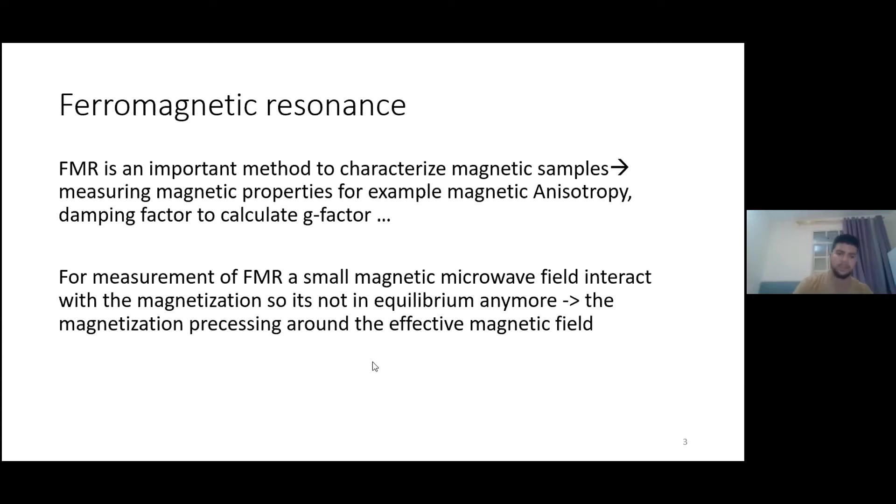There's two ways to measure the spin current. Either we do it directly with the line widths or indirectly if we transform the spin current into a charge current. And that's what we call the spin-Hall effect.